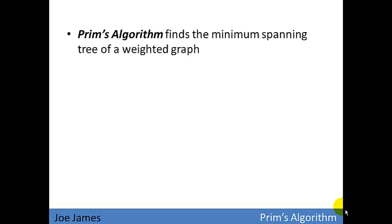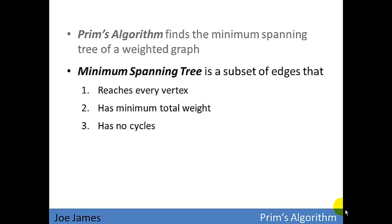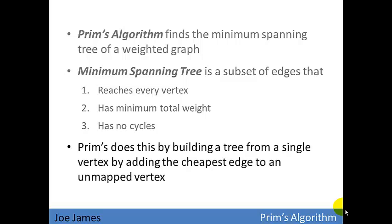Prim's algorithm finds the minimum spanning tree of a weighted graph. A minimum spanning tree is a subset of edges that reaches every vertex, has minimum total weight, and has no cycles. Prim's does this by building a tree from a single vertex, by adding the cheapest edge to an unmapped vertex.